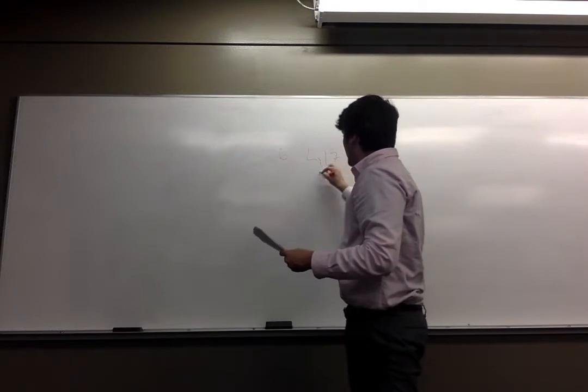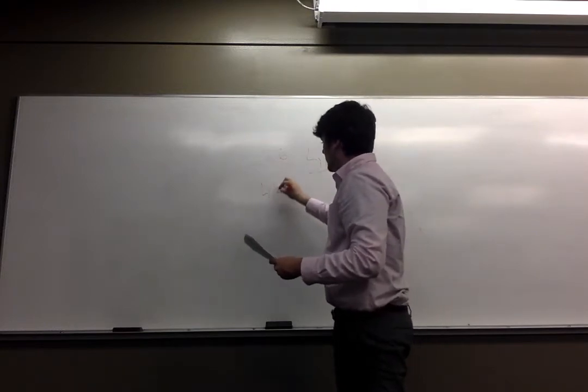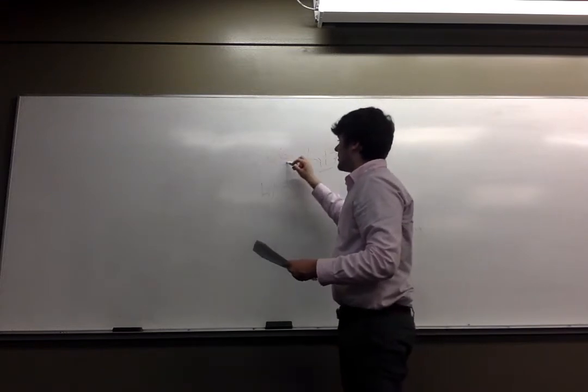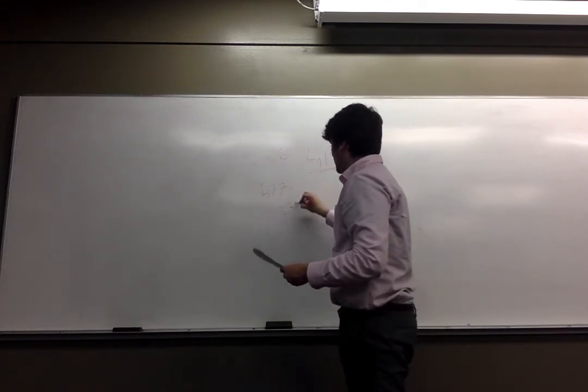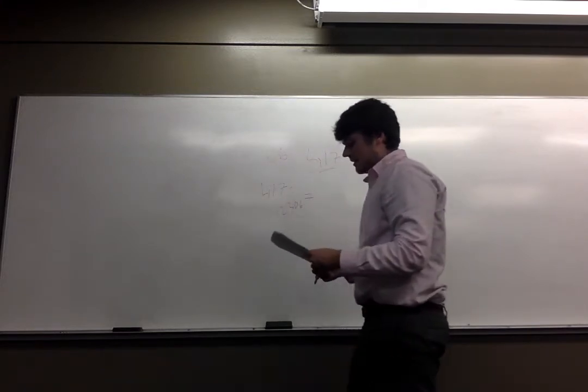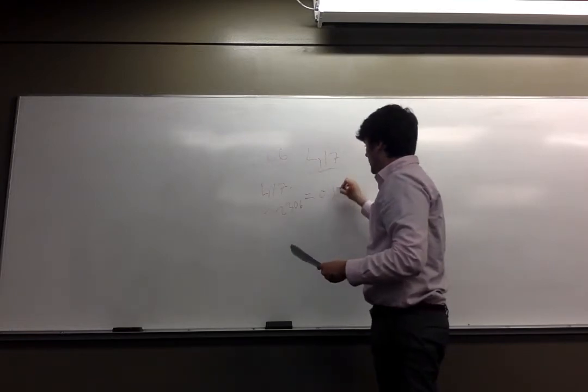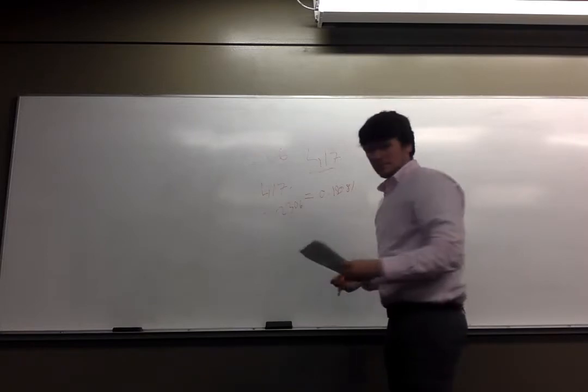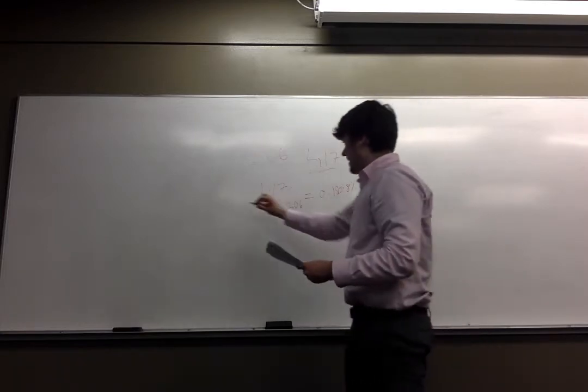We just take people who have, which is 417, and divide that by the total sample size, which is 2,306, and that is equal to 0.1808. And that's part A.